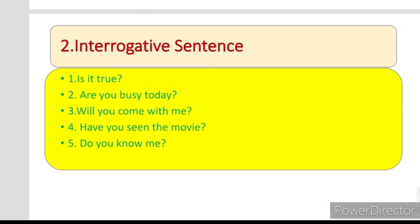Second type is Interrogative sentence. Interrogative sentence yani sowaliya jumaley. Is it true? Kya yeh sahih hai? Are you busy today? Will you come with me? Have you seen the movie? Do you know me? Kya aap mujhe jante hain? Yeh sentences Interrogative hain jis mein yeh yes no type sowaliya jumaley hain verbal question bhi keh sakte hain. Jab ise detail mein parhein ge to hum degar sowaliya jumlon ke bare mein bhi baat karein ge.